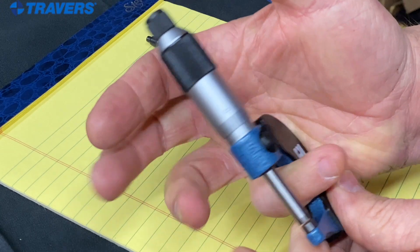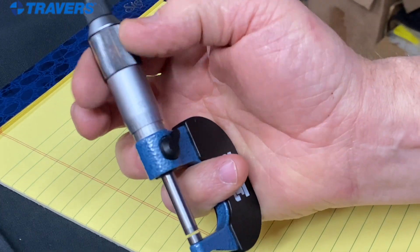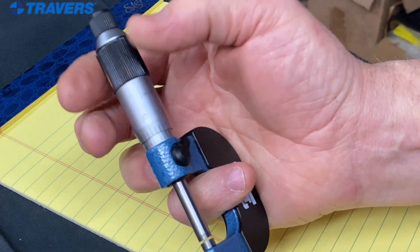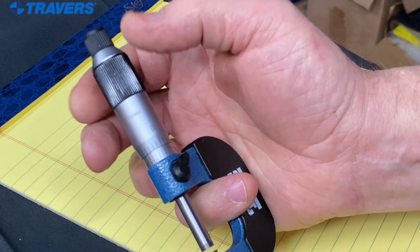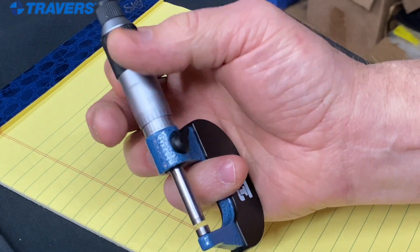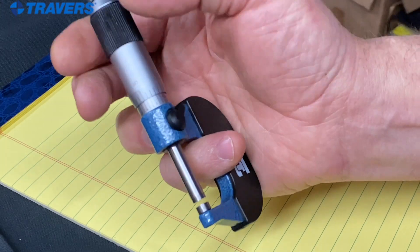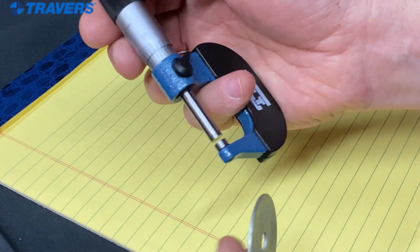Take your ring finger and rest it on the back of the frame and then use your thumb and index finger to turn the thimble. And that's a real secure way to hold it in your hand while you're measuring something.